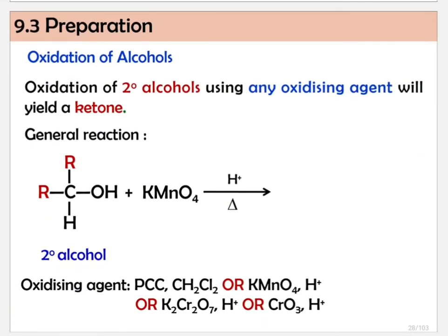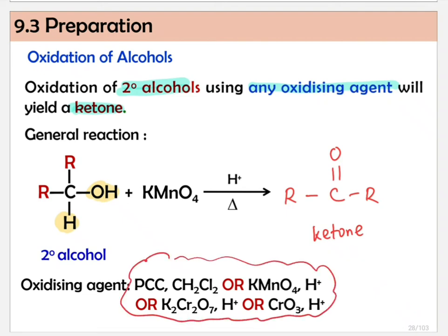What about ketone? If we use a secondary alcohol, it doesn't matter which oxidizing agent is used — PCC, KMnO4, K2Cr2O7, CrO3 — all of them will still produce a ketone. Why? Because oxidation must package the hydrogen together with the OH. So for a secondary alcohol, we copy back R and R, and the OH with hydrogen is oxidized to give C=O. You get a ketone. Any oxidizing agent can be used to oxidize a secondary alcohol to a ketone.